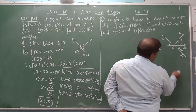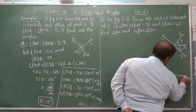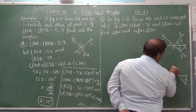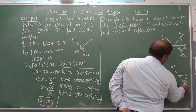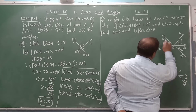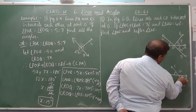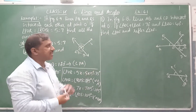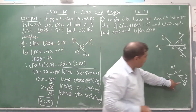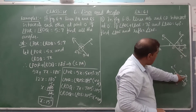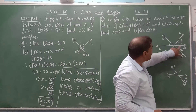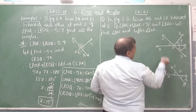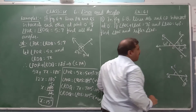The two lines intersect each other at point O. Angle AOC and angle BOD are both vertically opposite angles. We know angle BOD is 40 degrees, therefore angle AOC is also 40 degrees. Why? They are vertically opposite angles.